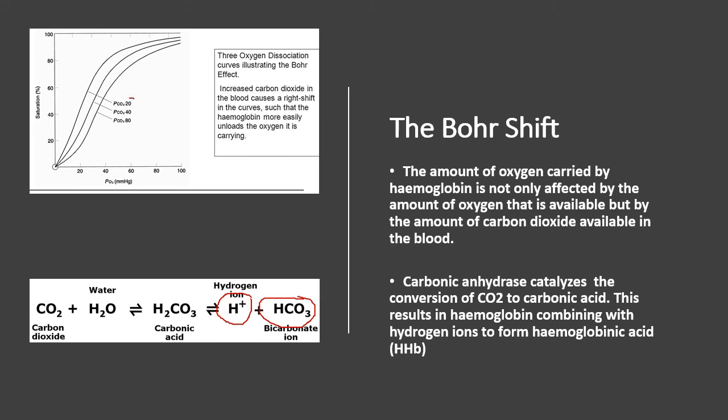The Bohr shift states that even with an increase in the partial pressure of oxygen, if CO2 is present, the oxygen dissociation curve shifts to the right. At a partial CO2 pressure of 20 kilopascals, the shift is small — hemoglobin can still be well saturated at low oxygen levels. But as CO2 pressure increases to 40 or 60 kilopascals, the curve shifts further right, meaning more oxygen is now required to saturate hemoglobin. Essentially, you don't want excess CO2 in the blood causing hemoglobin to release oxygen and bind hydrogen ions instead.